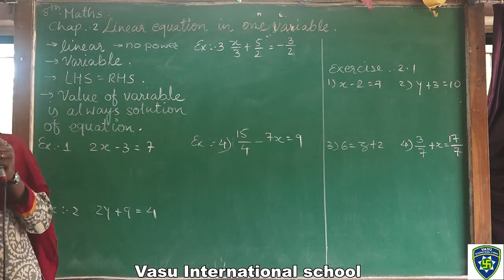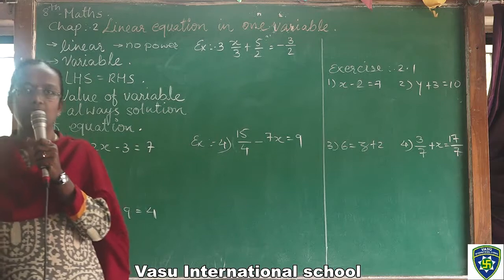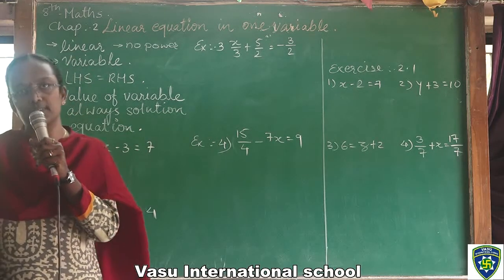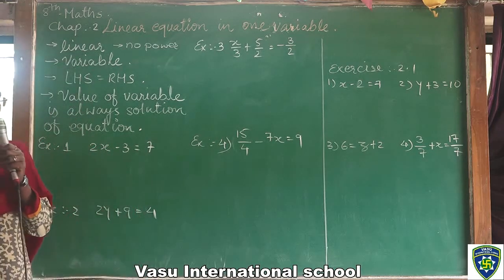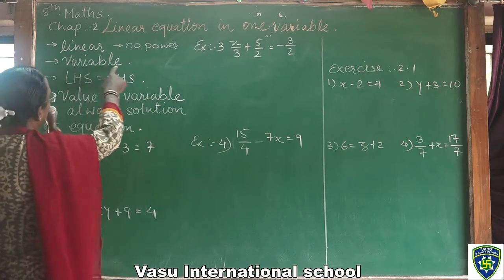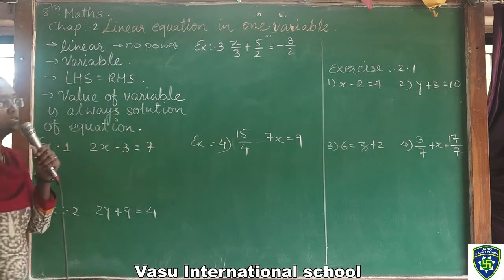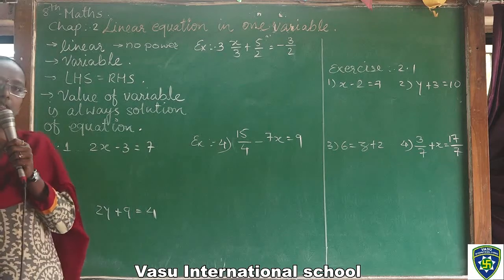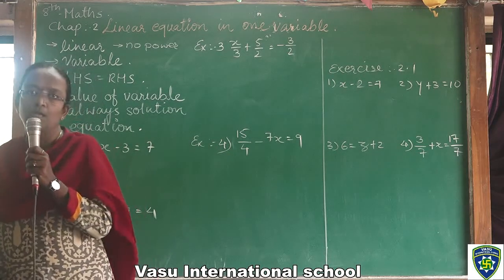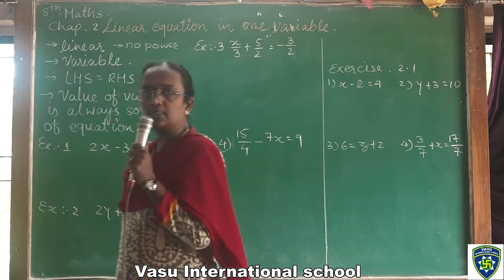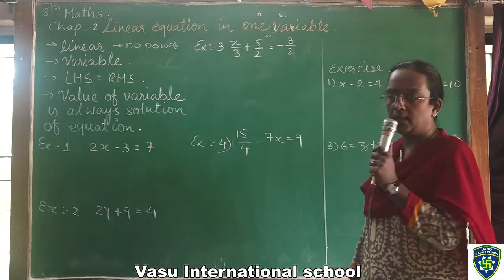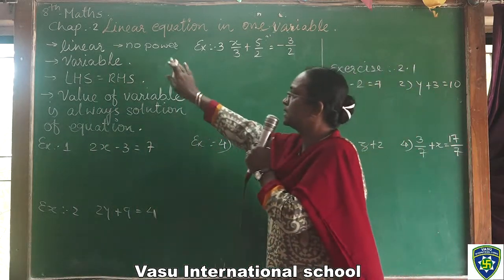Linear equation means no power on the variable. Variable ke upar koi power nahi hota hai. Only single x power 1, or y power 1, or z power 1. Then another word is variable. The unknown numbers or unknown quantities — a, b, c, d, up to a to z — are called variables.